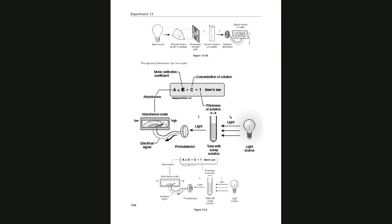We can keep the value of the pathway for the light, which is one centimeter — that depends on the cuvette we are using. If you are using this type of cuvette, it's going to be kept as one centimeter, so it's a constant. Epsilon is a coefficient, also a constant. C is the concentration of the solution, so concentration is directly related to absorption: the higher the concentration, the higher the absorption.